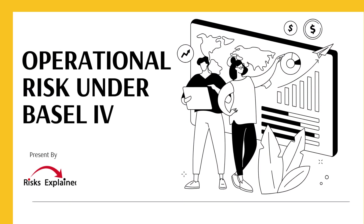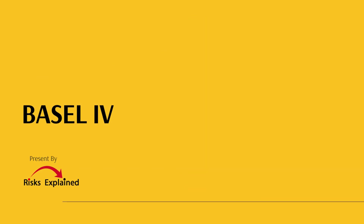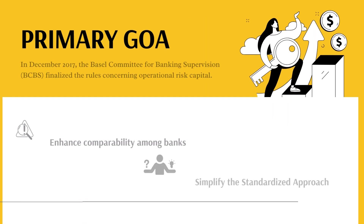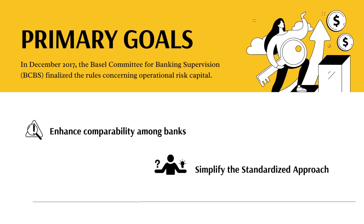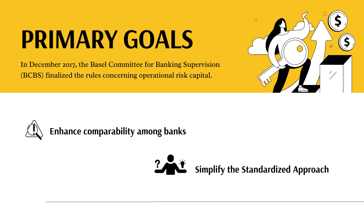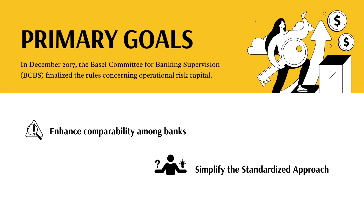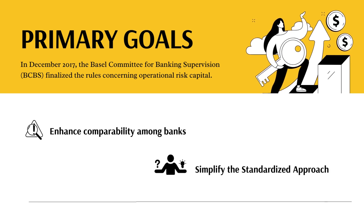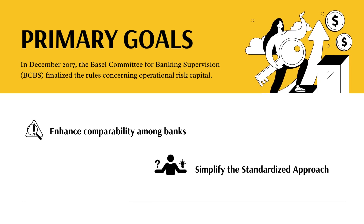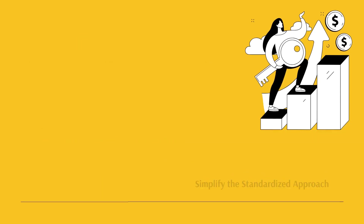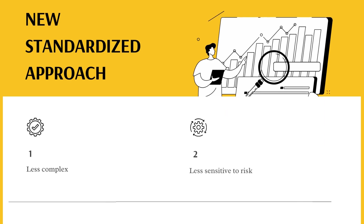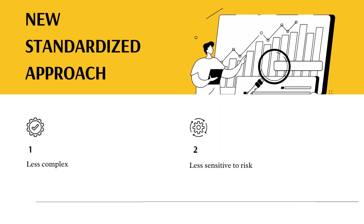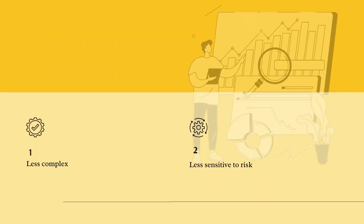Operational risk under Basel IV. In December 2017, the Basel Committee for Banking Supervision, BCBS, finalised the rules concerning operational risk capital. The primary goals behind these new regulations were to enhance comparability among banks and simplify the standardised approach. Unlike the previous advanced measurement approach, the new standardised approach is less complex but also less sensitive to risk.